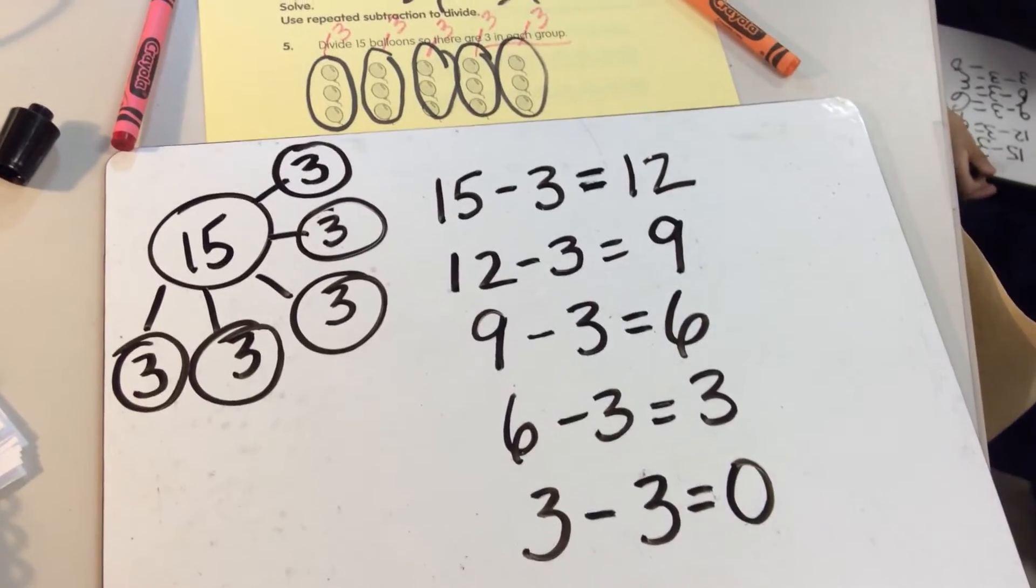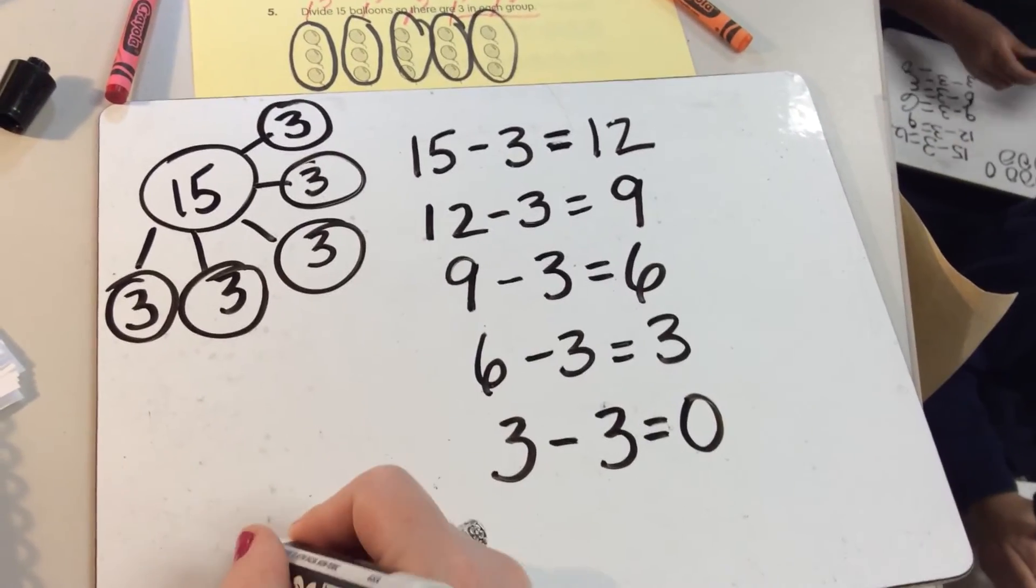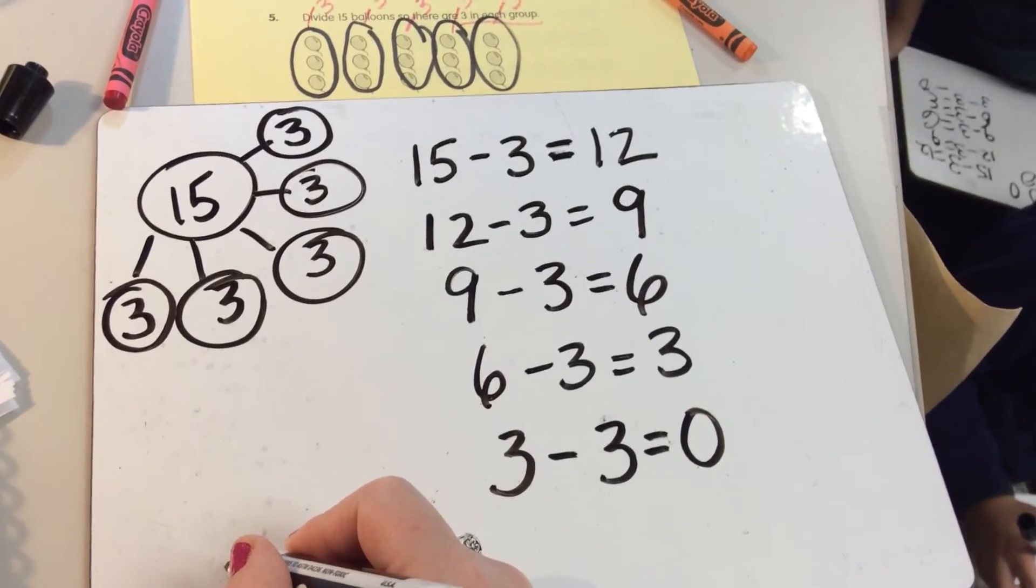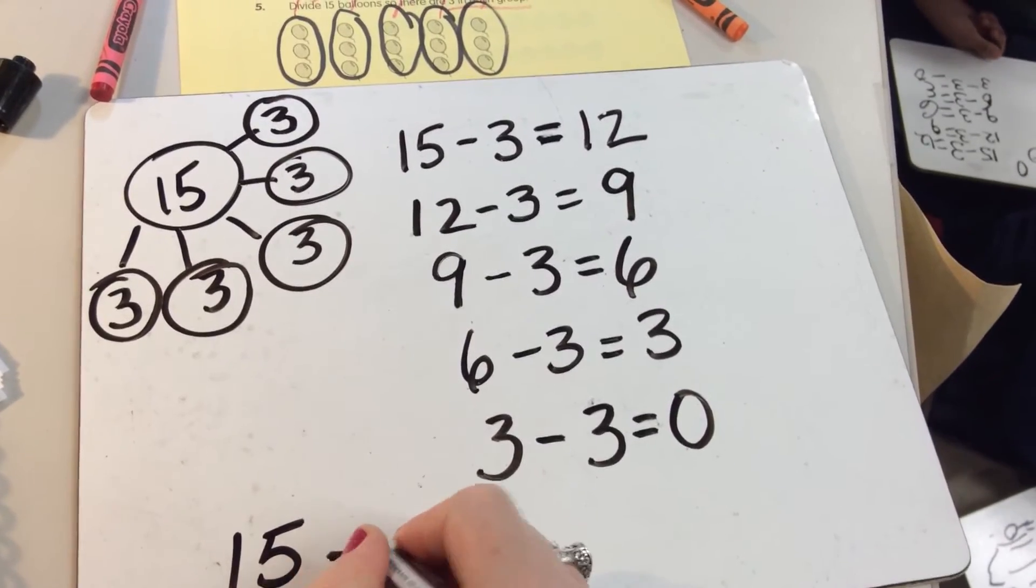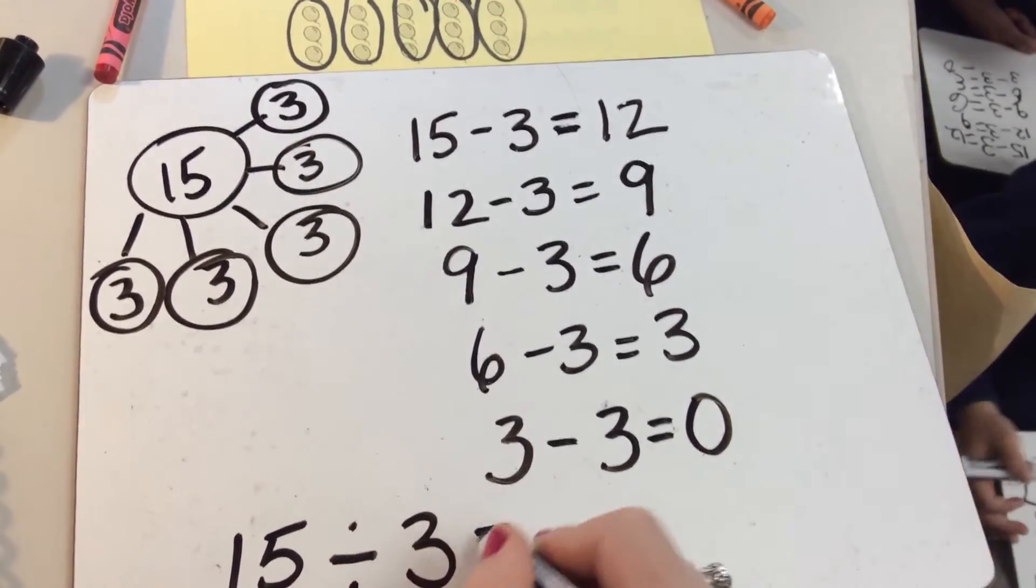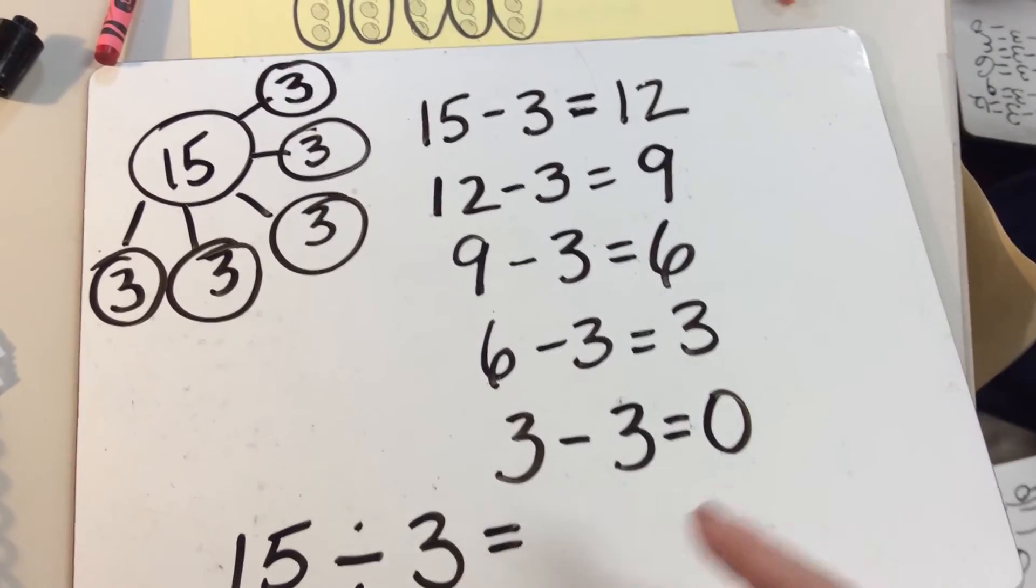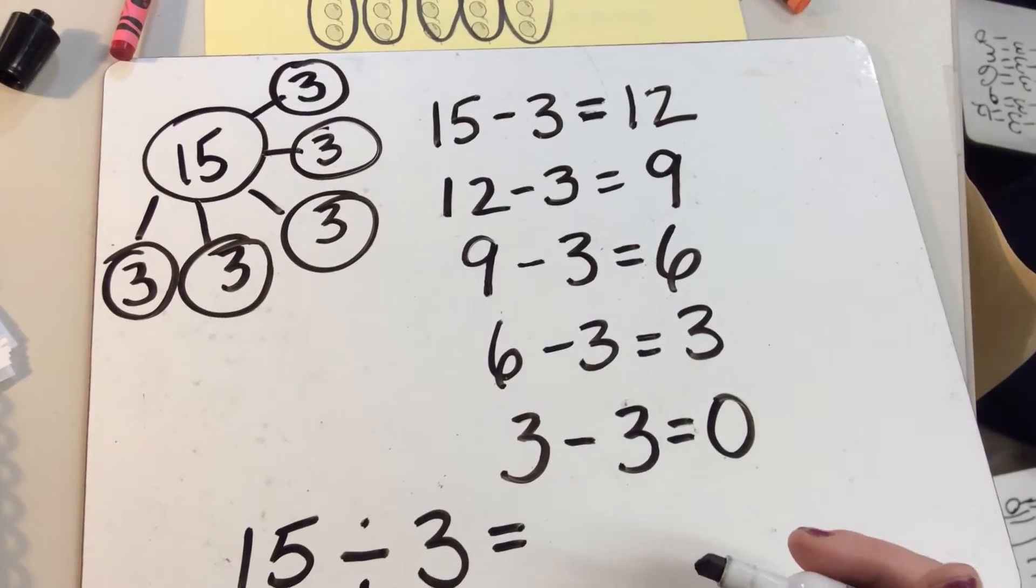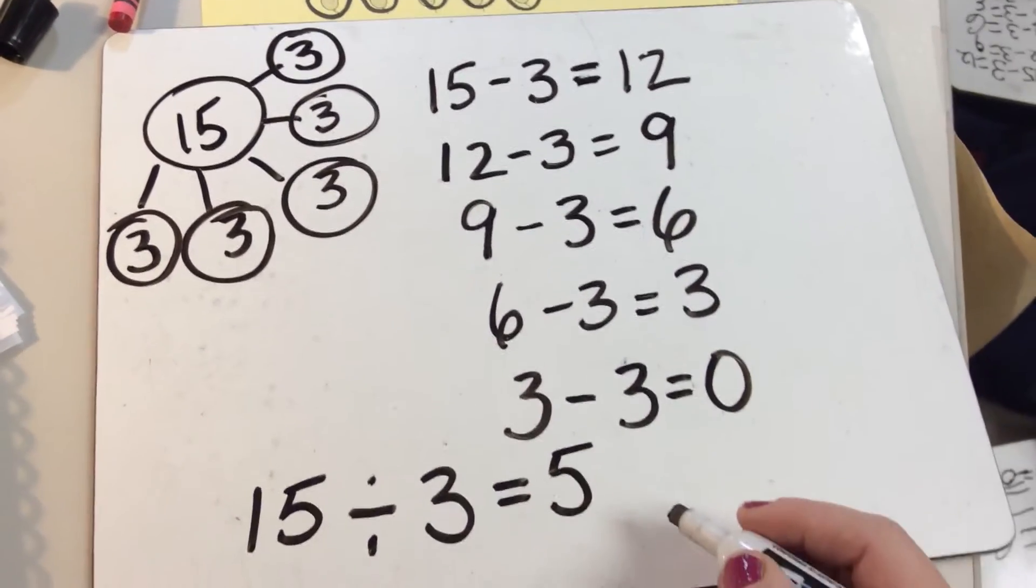Now, let's write the division number sentence. So we had the whole. What's our whole? What was our whole we started with, guys? 15. And then, we were taking away in groups of 3. How many groups did we make? 5. Now, you know what, guys? We can check our work.